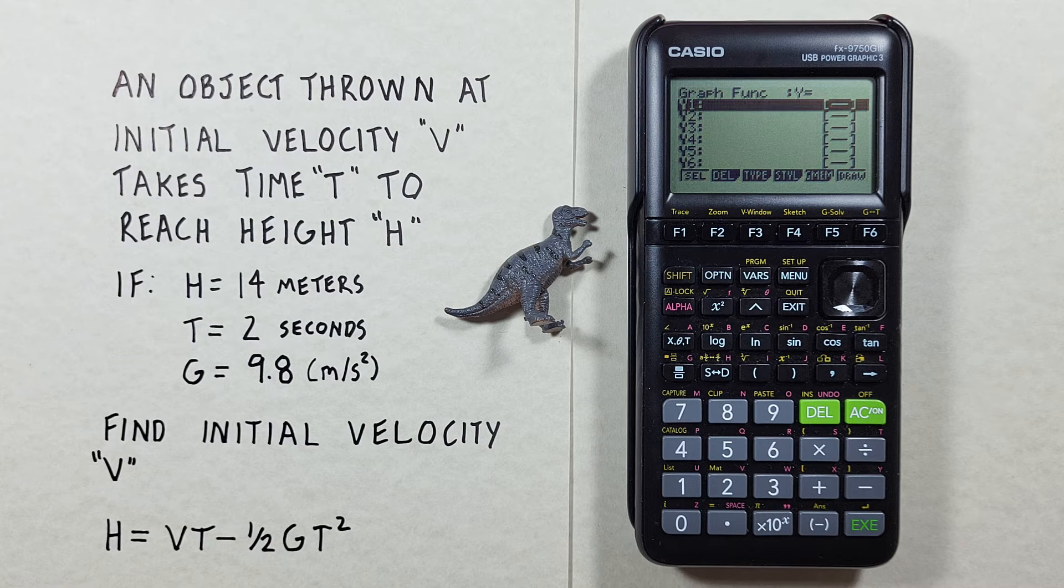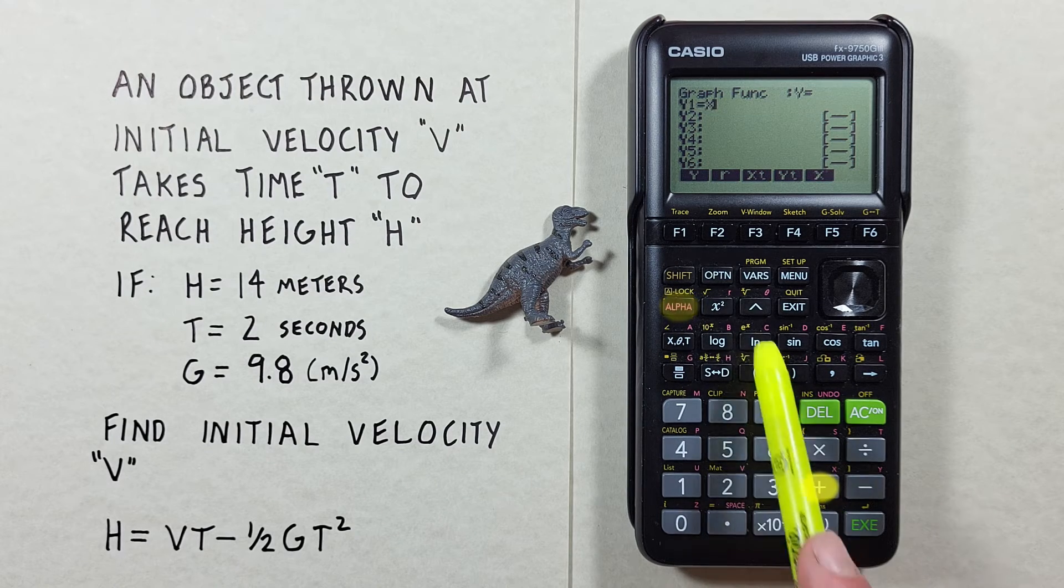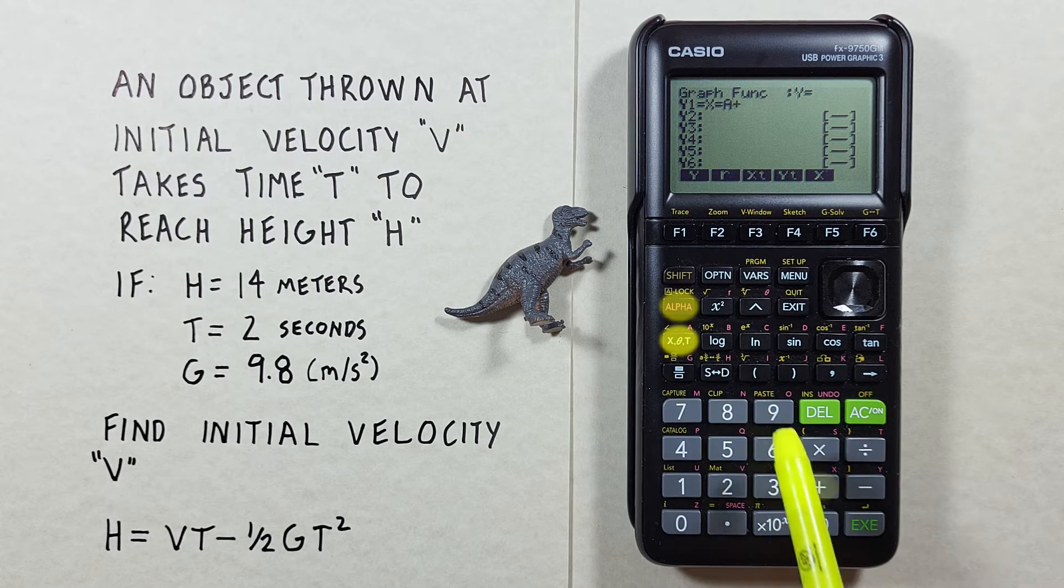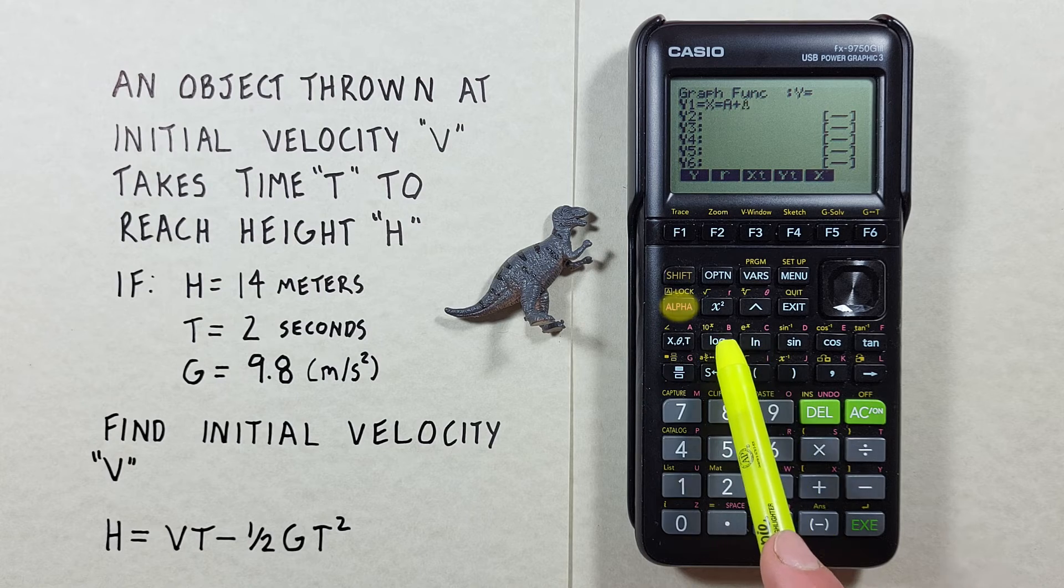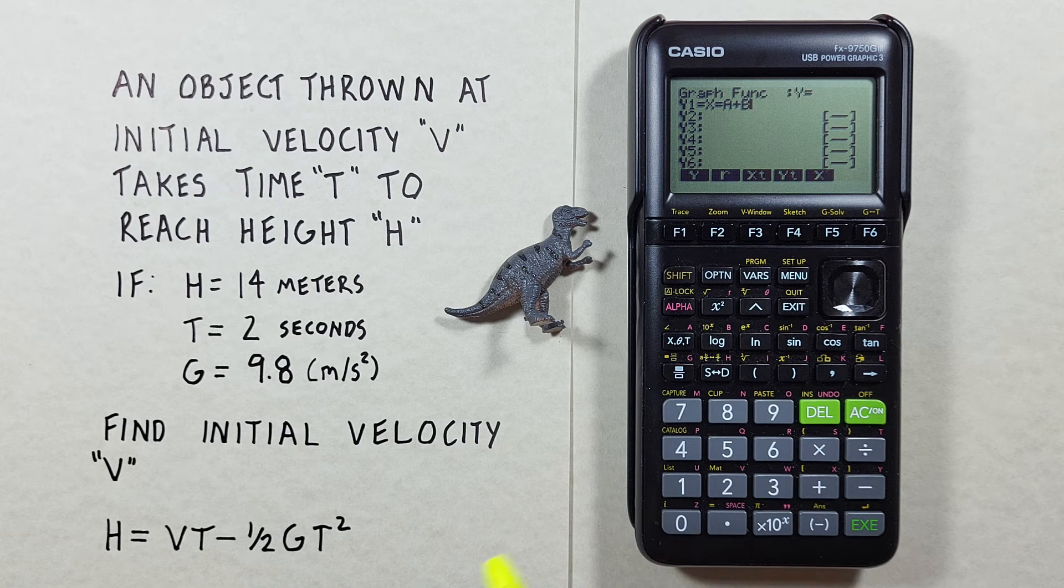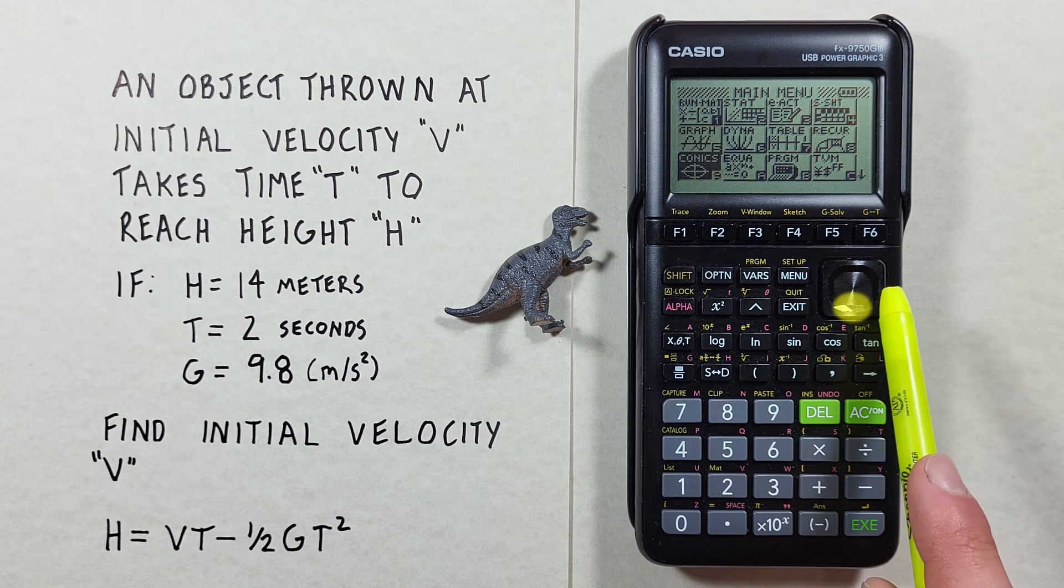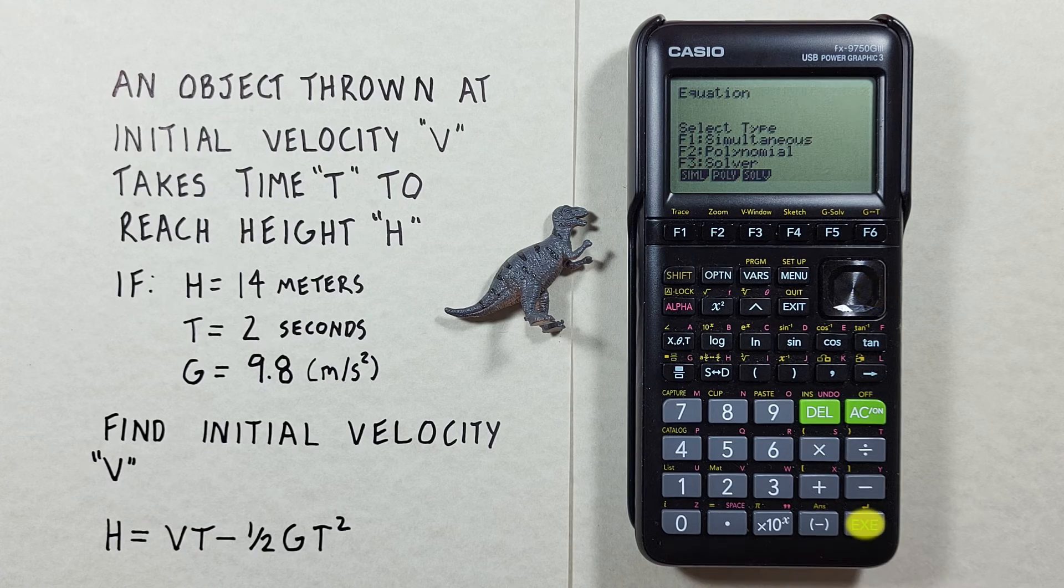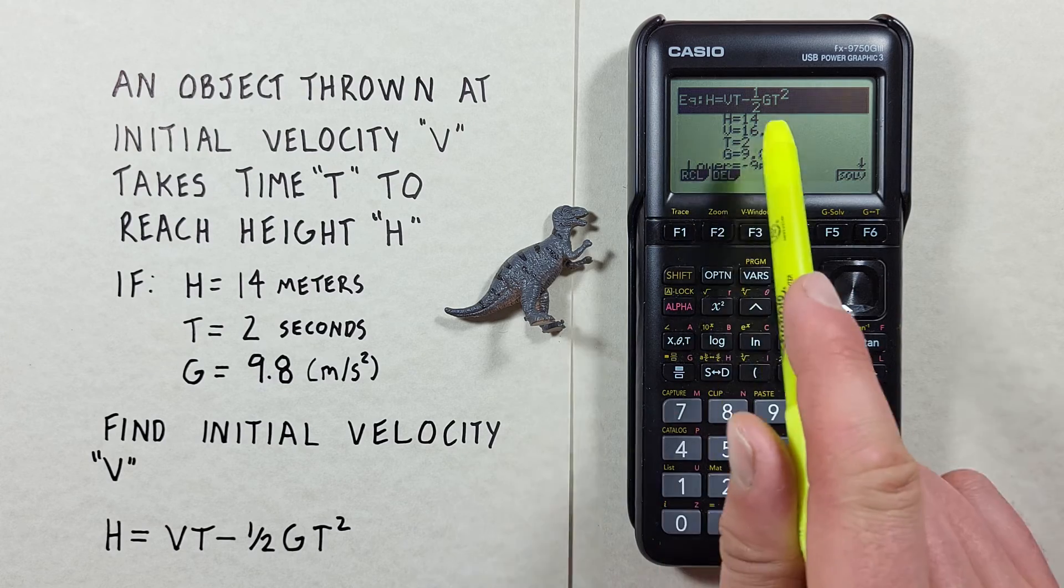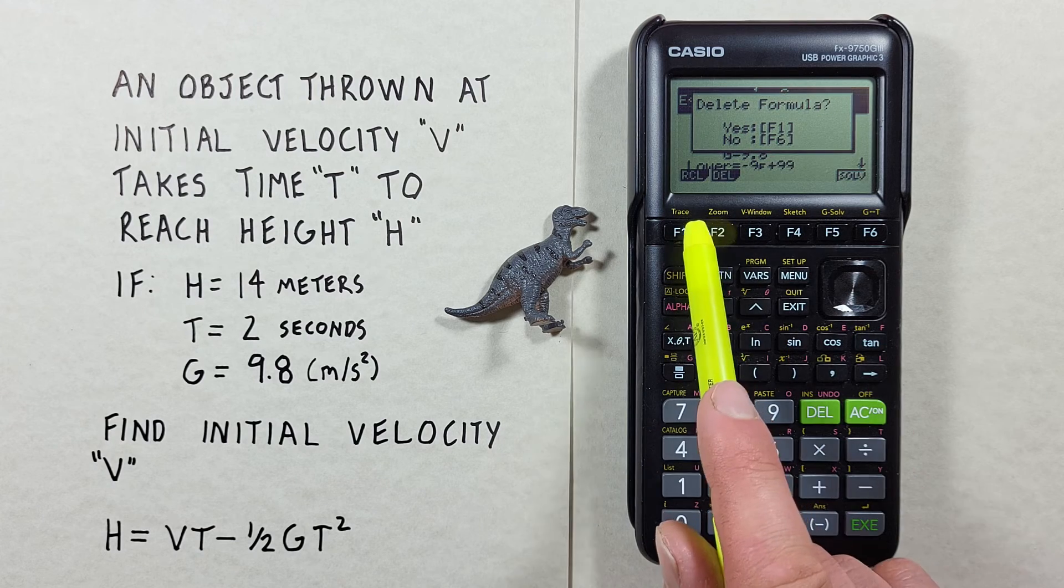Let's enter something simple. Let's say alpha x is equal to alpha a plus alpha b. There we go, x equals a plus b. Now, if we exit out of here back to the menu, we can go back to the equation app and back into our solver. And here we see we still got our old equation, we can delete that with F2. Delete the formula F1, yes.